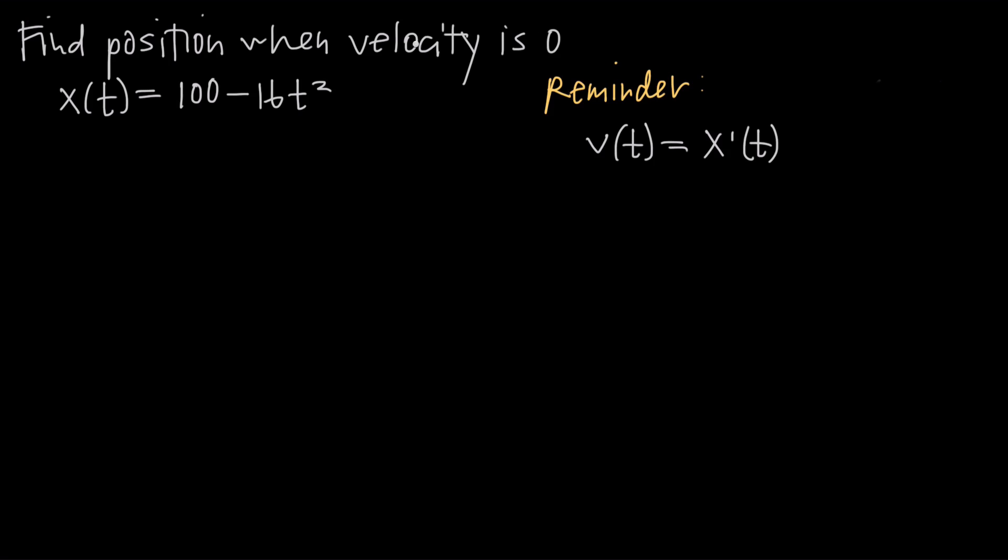So if we're interested in the point where velocity is 0, then we're going to first need to find the velocity function, which of course we'll do by taking the derivative of position. So taking the derivative of position here, we're going to say x'(t) is going to be equal to, the derivative of 100 is 0 because it's a constant, so we have 0. And then here, negative 16t squared. Well we just use the power rule, and we bring this exponent down in front and multiply it by the coefficient. So negative 16 times 2 gives us a negative 32. We leave the t.